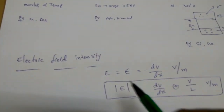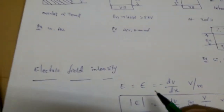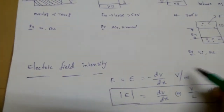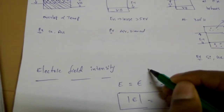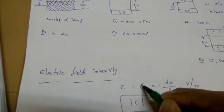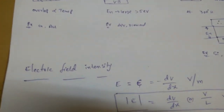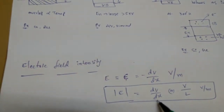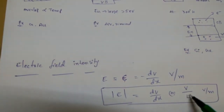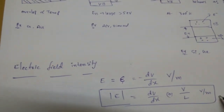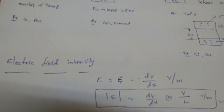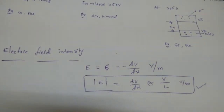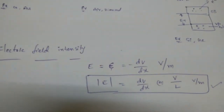The next formula is electric field intensity, denoted by E (or a script-E notation). Note the difference from epsilon (permittivity). Electric field is defined as −dV/dx, or in magnitude as |dV/dx|, which is voltage per unit length — volts per meter. Sometimes exam questions give voltage per centimeter, so we need to convert.